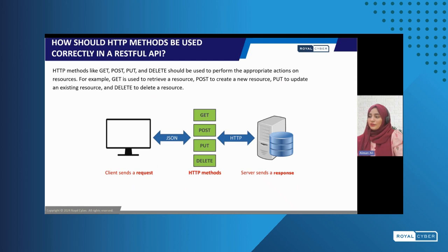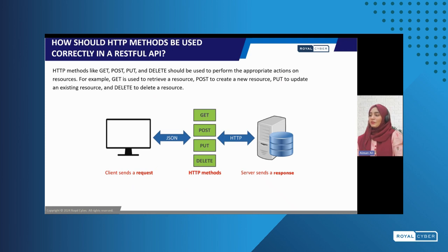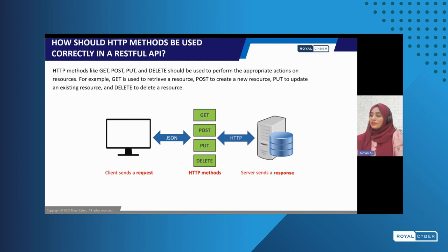Moving to the use of HTTP methods: one of the right practices of REST API design is the correct use of HTTP methods, which is the backbone of REST API. There are four common HTTP methods used in REST. GET is used to retrieve data or a listing of data. POST is used to create a new record or data. PUT is used to update an existing record or data. And lastly, DELETE is used for removing or deleting data or information.